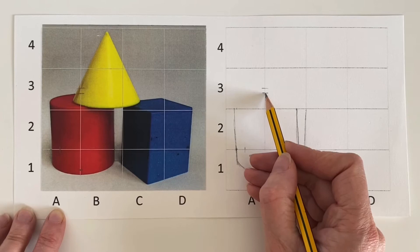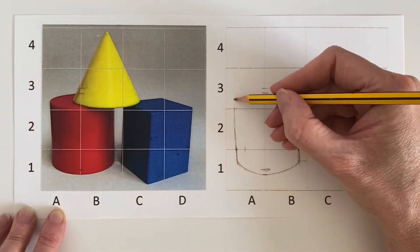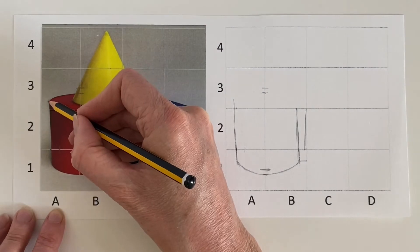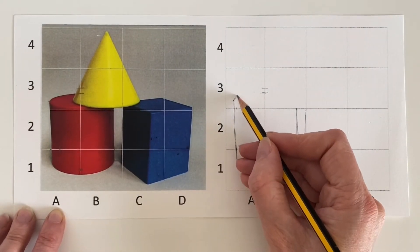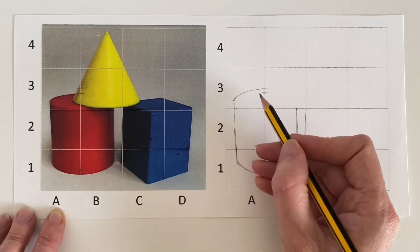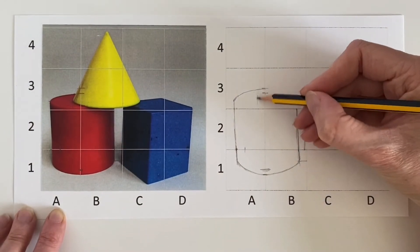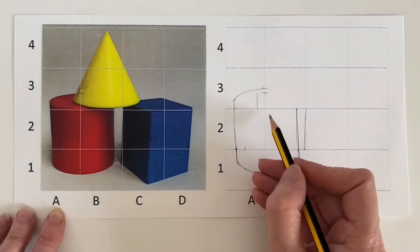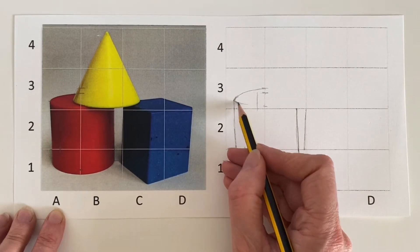Now it doesn't obviously connect to there because the cone is sat on top of it. I'm going to work out where that point is. Start drawing a line that corresponds and then I need to put this point in.